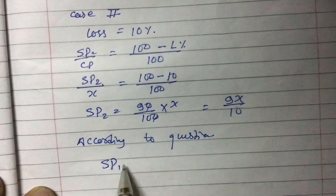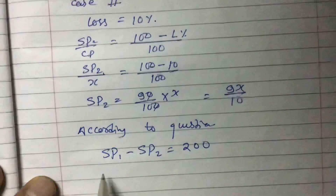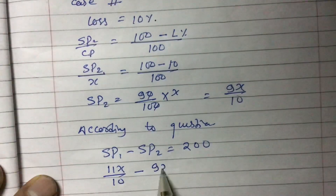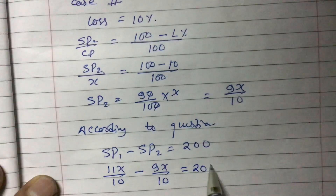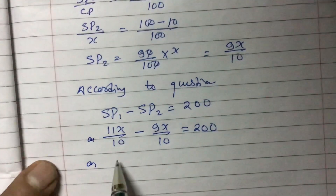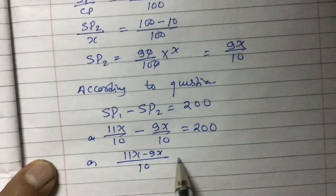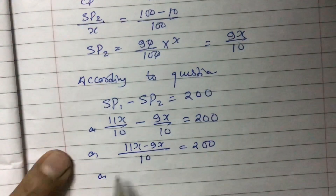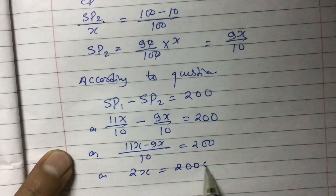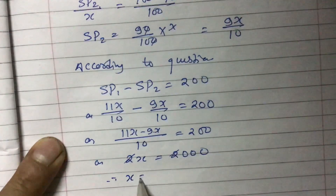SP1 minus SP2 equals 200, so 11X by 10 minus 9X by 10 equals 200. Taking LCM as 10, we get 11X minus 9X equals 200, so 2X equals 200. The 2 and 2 cancel, giving X equals 1000.